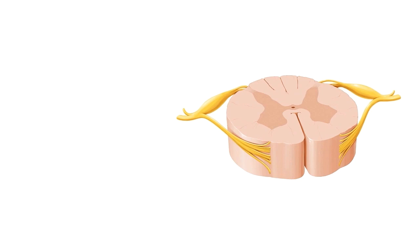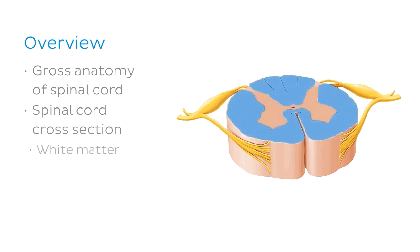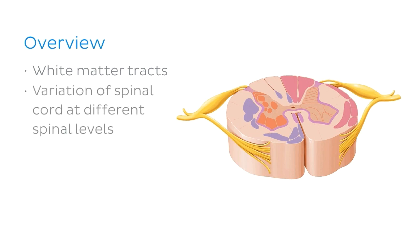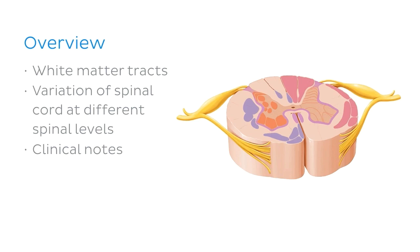You may be thinking the spinal cord sounds like a super complicated structure, but worry not. Throughout this tutorial, we'll break it down for you in a logical, easy-to-understand way. We'll start with a quick recap of the gross anatomy of the spinal cord, then take a look at a basic view of the spinal cord in cross-section before we move on to the white matter, its anatomical subdivisions, and the bundles of axons called tracts. Throughout this tutorial, we'll address the different functions that all these structures have and the variation of the spinal cord at different spinal levels. We'll finish up with some clinical notes to give you an appreciation of why the function of the white matter tracts is so important.